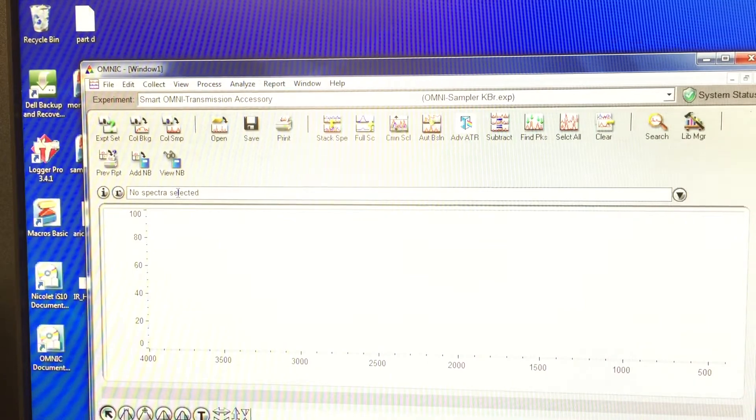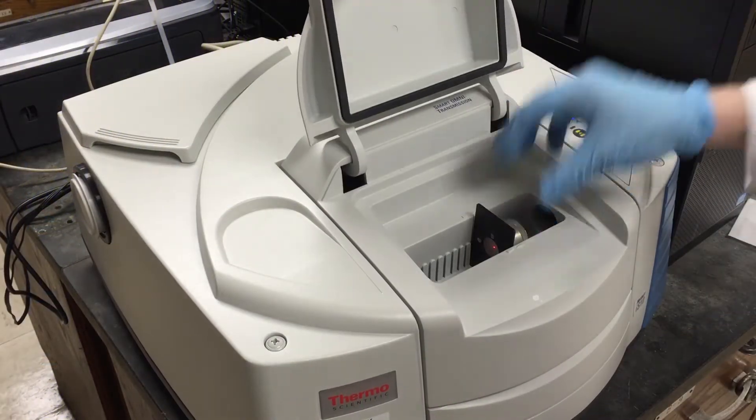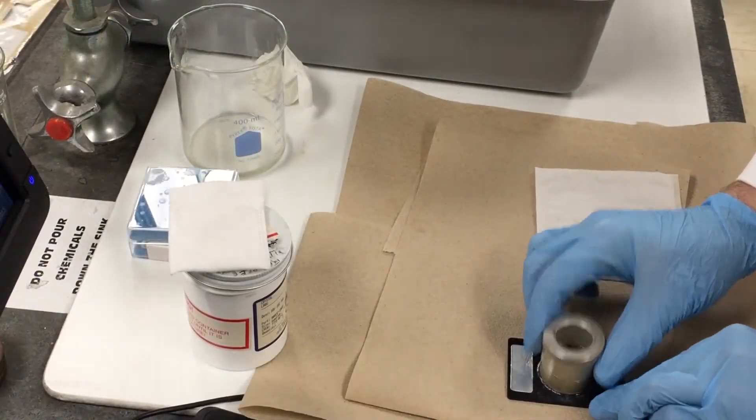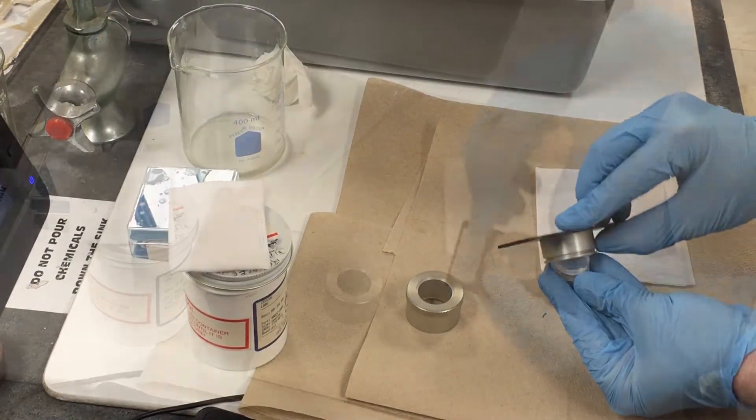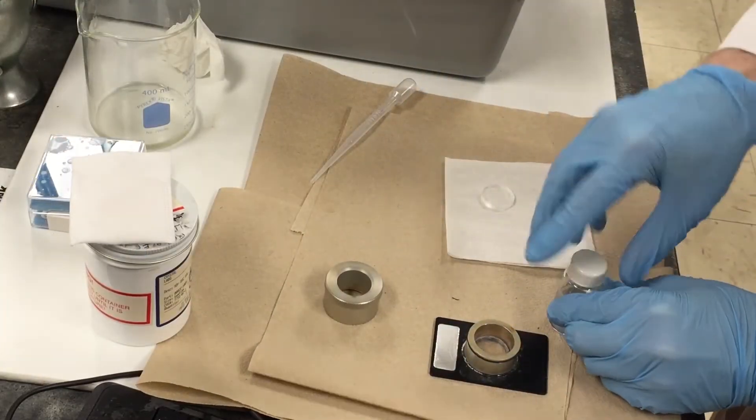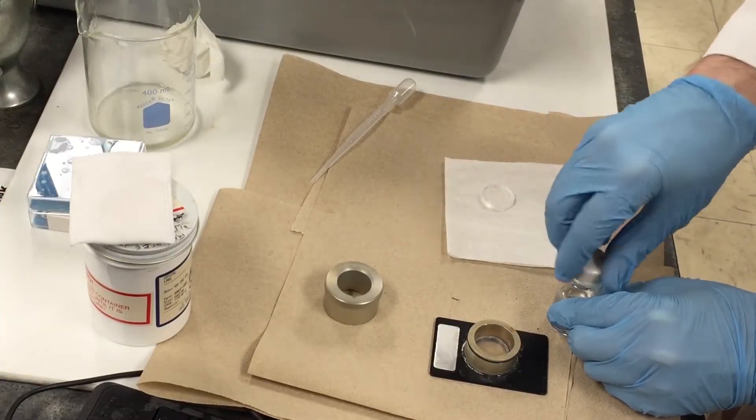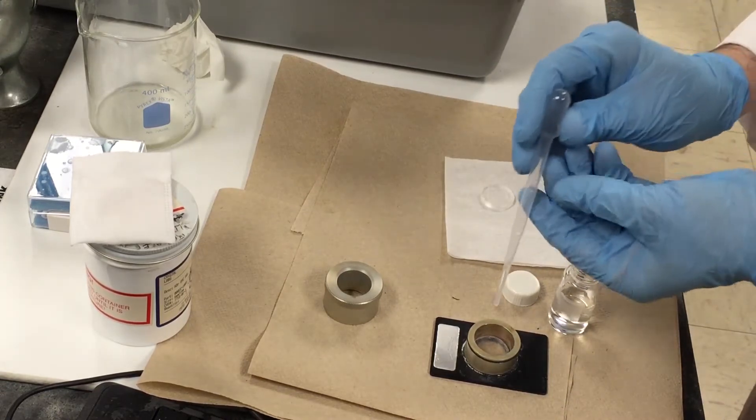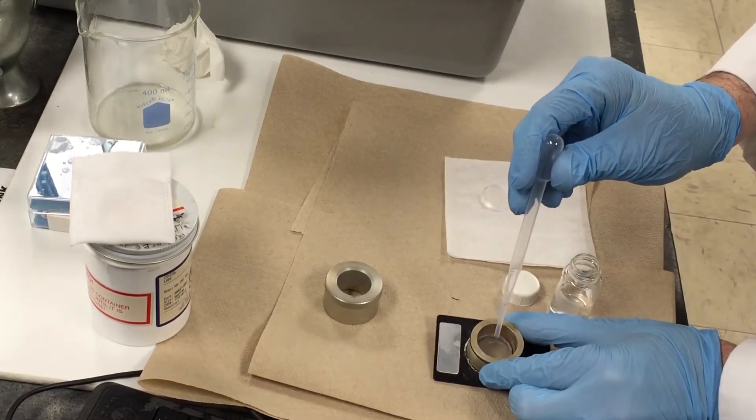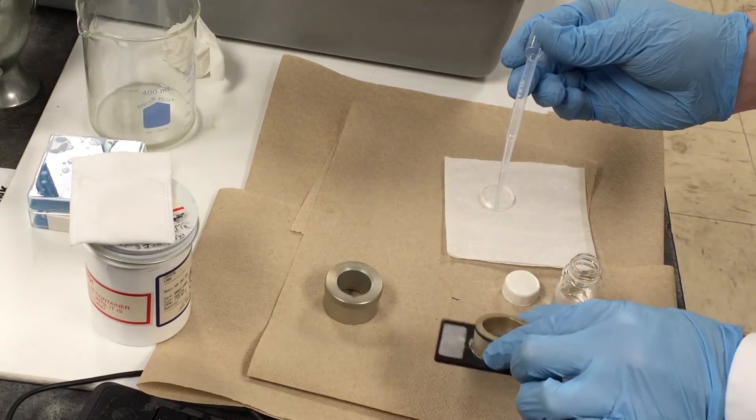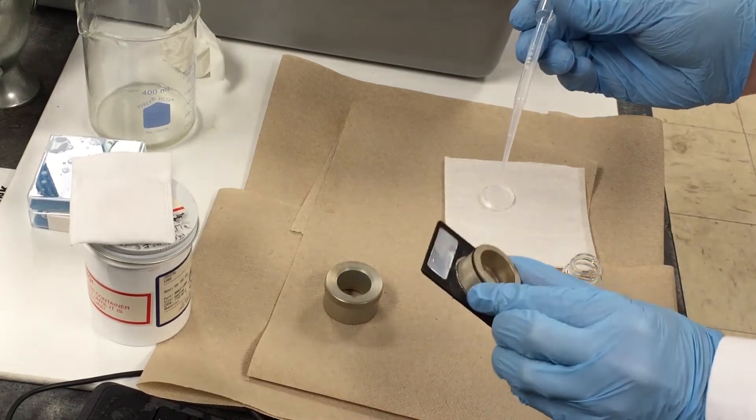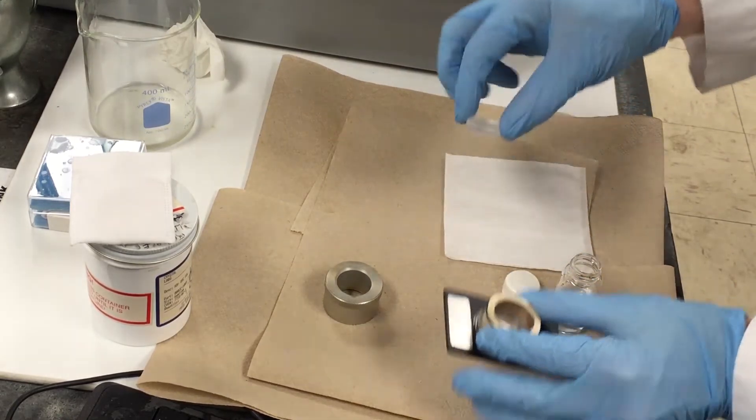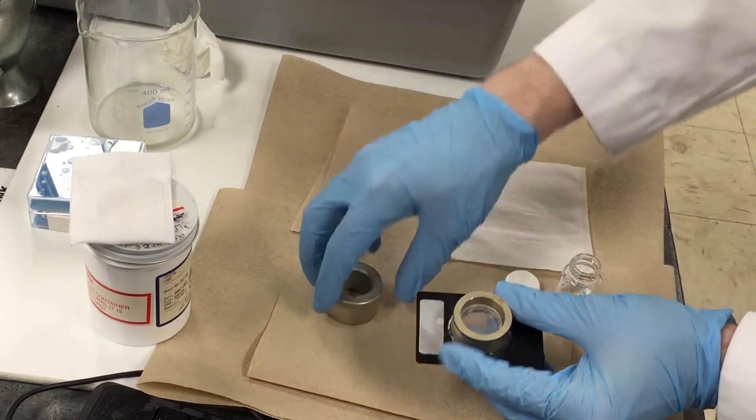Now you're ready to run the sample by sandwiching it between these two salt plates. Remove the top salt plate from the holder and place it on a fresh kim wipe. If your sample is a liquid, simply place one or two drops onto the bottom salt plate. Cover with the other salt plate and close the holder, being careful not to apply too much pressure.